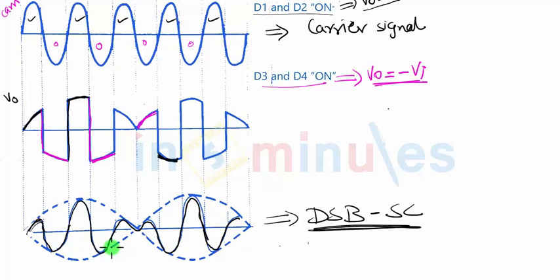That's how the ring modulator is able to remove both the carrier and modulating signal from the output side, and hence it is also called a double balanced modulator.